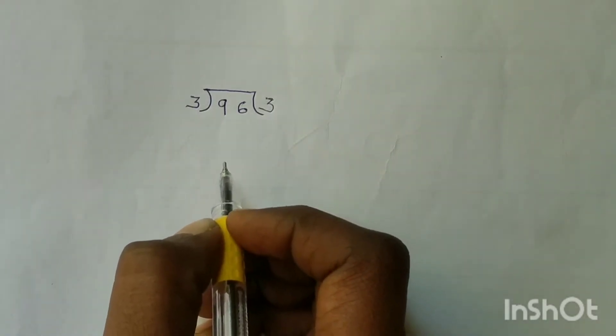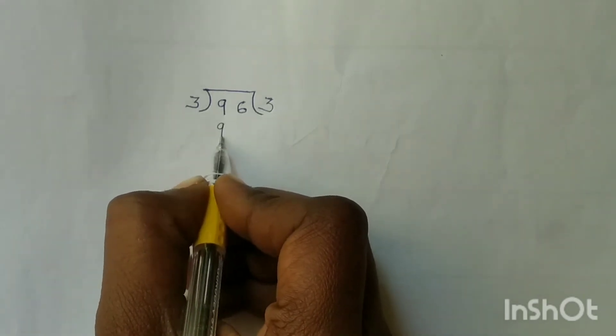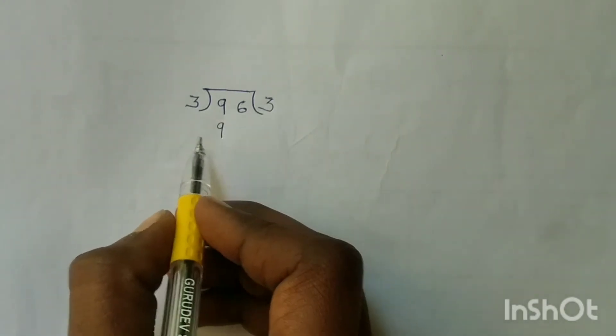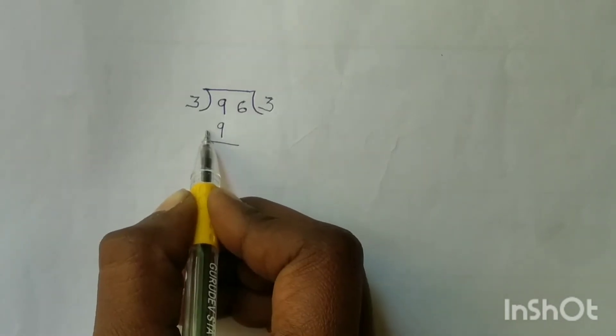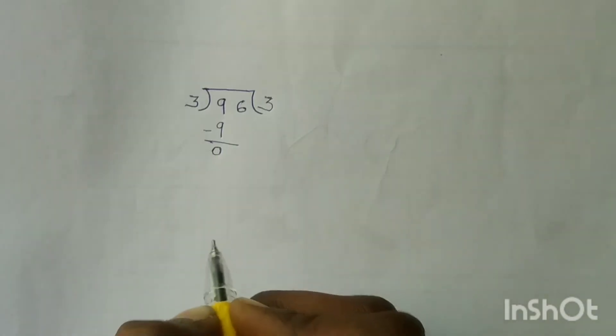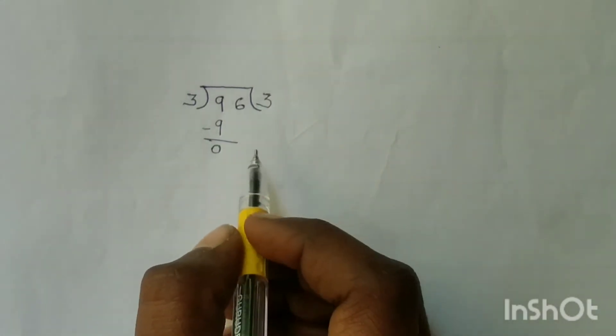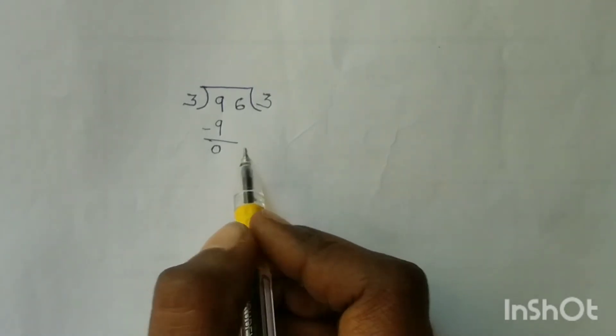And write 9 below the dividend in the tens place. 9 minus 9 is equal to 0. Now bring down 6.